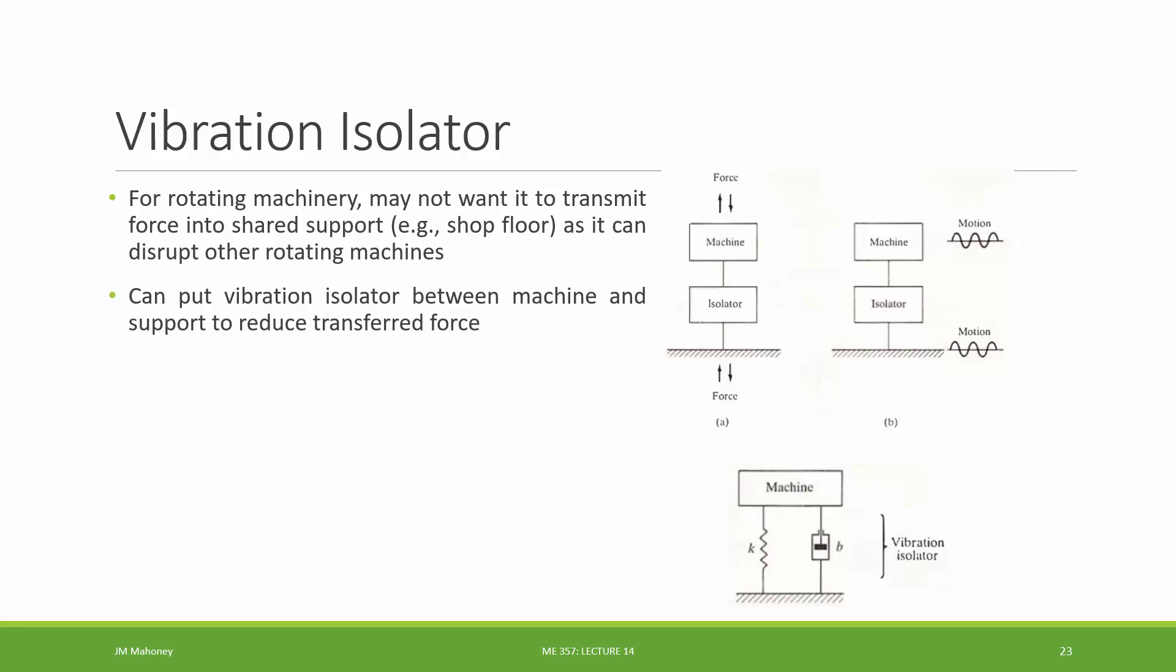We can choose the K and the B such that we can minimize or mitigate the amount of force that's going through. So by specifically choosing the K and the B, we can select how much of that force is going to be transmitted. So that's the idea of a vibration isolator.